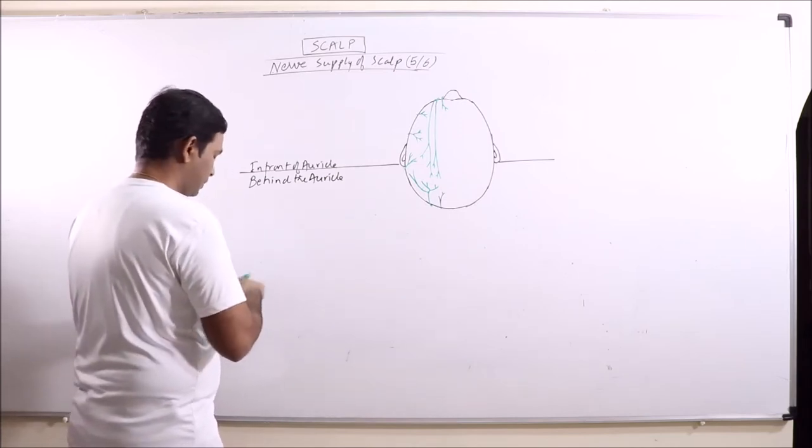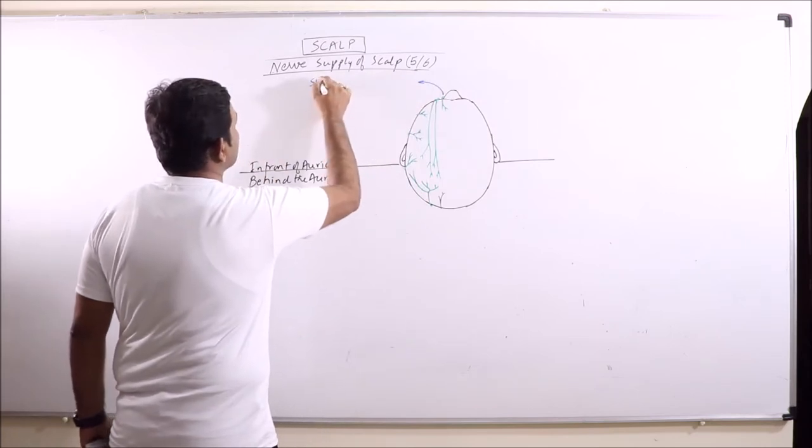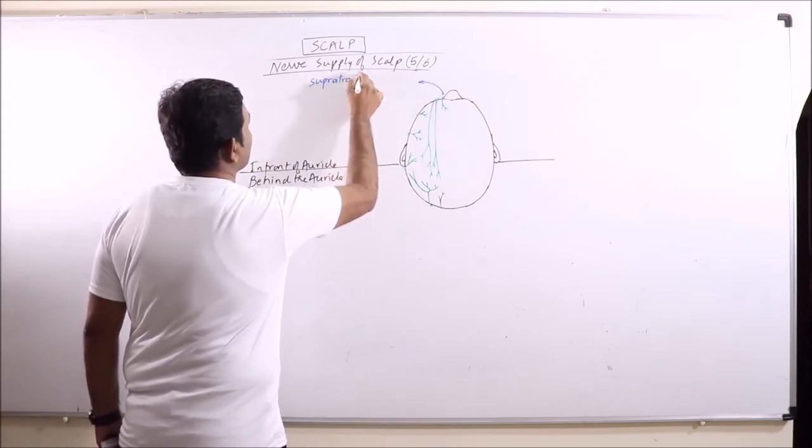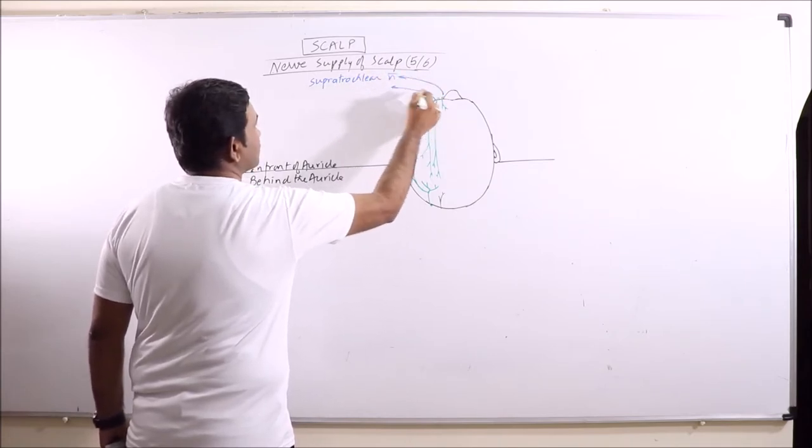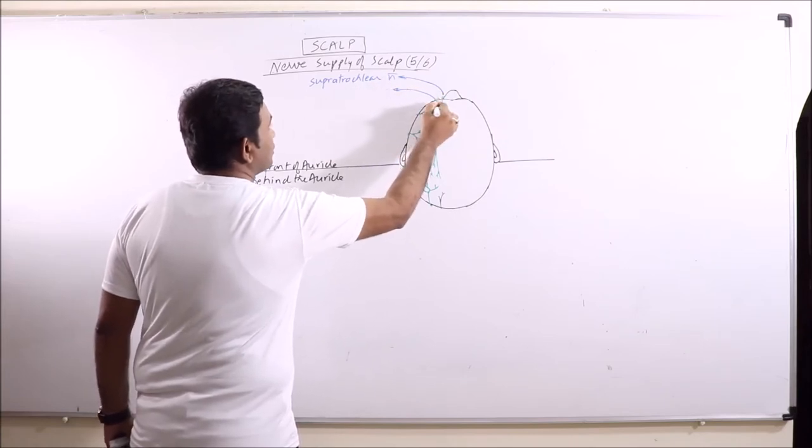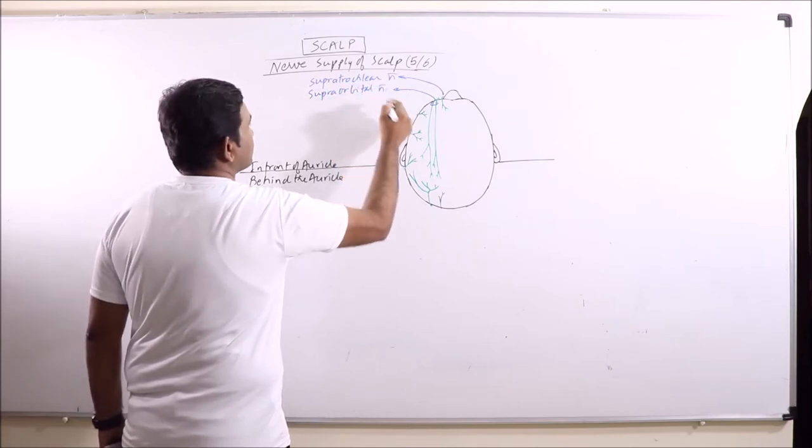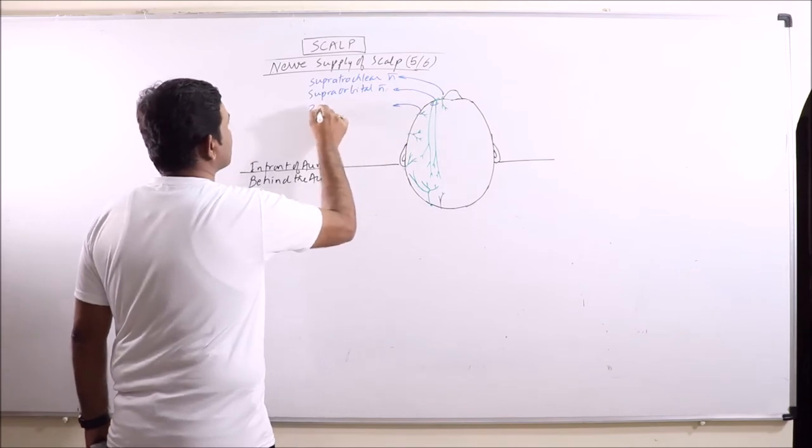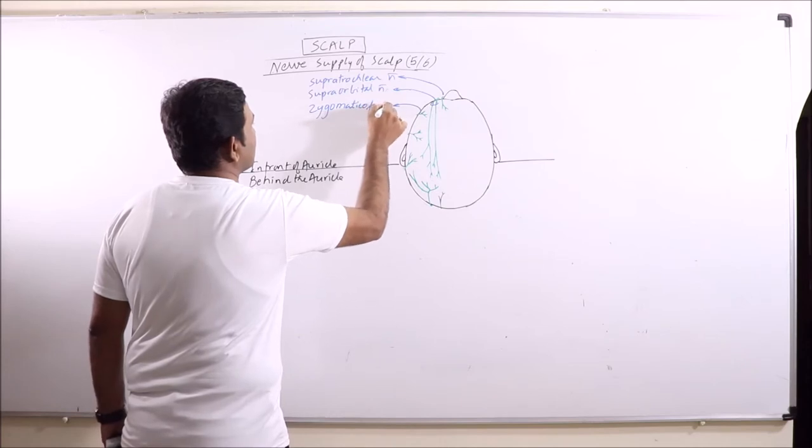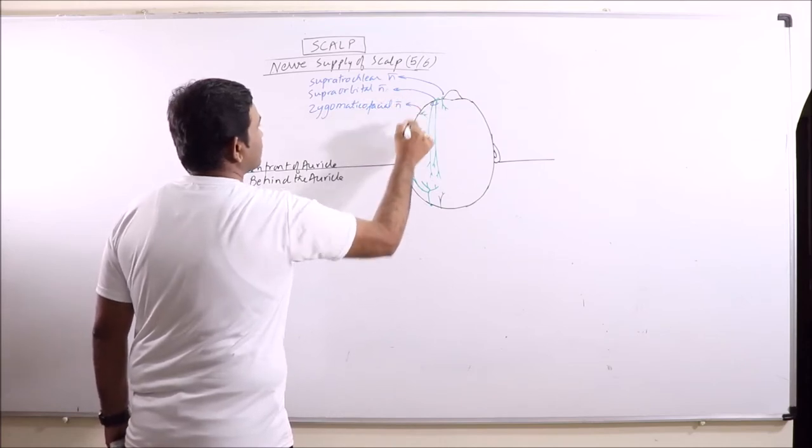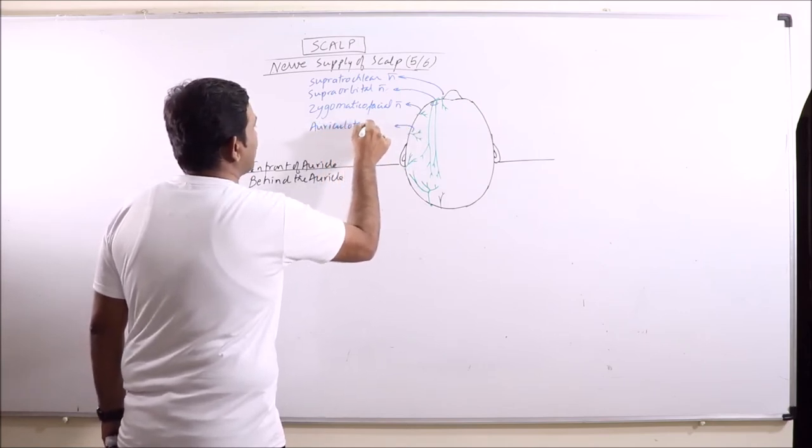Now sensory supply. This one is supra-trochlear nerve, these are supra-orbital nerve, this is zygomatico-temporal nerve, and this is auriculotemporal nerve.